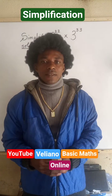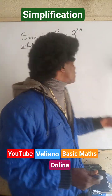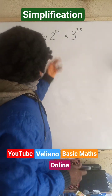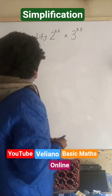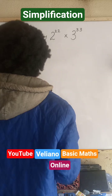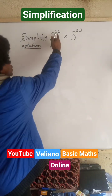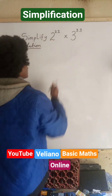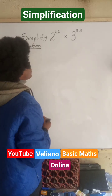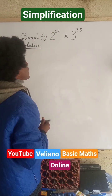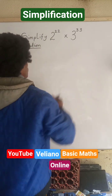Hello viewers. Let's look at this. Simplify 2 power 22 multiplied by 3 power 33.